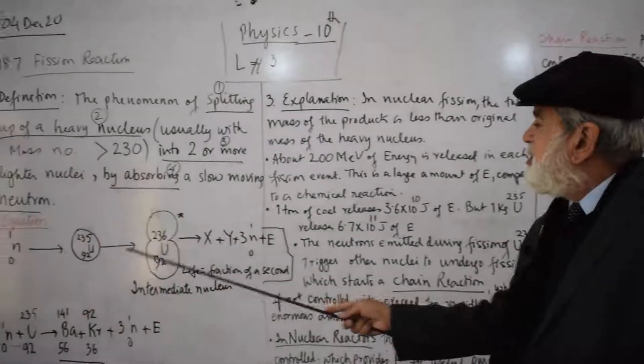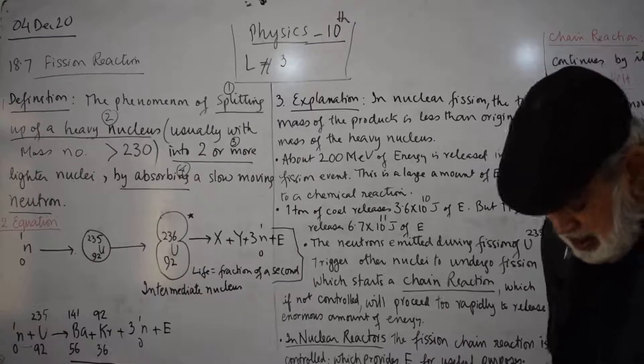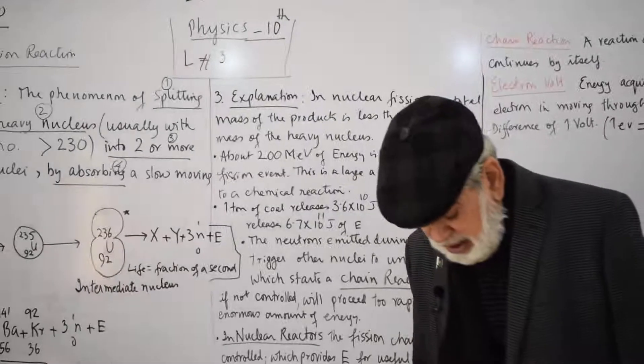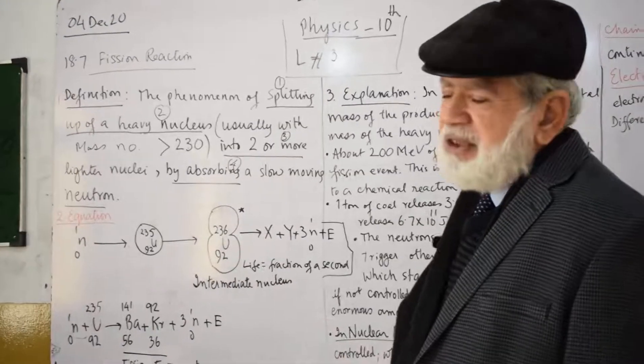And an atom would release 200 million electron volts. Now coming back to the same thing, I'll revise the main thing, these points again. Number one: What is nuclear fission? It is the phenomena, it is the process, in which a heavy nucleus splits up into lighter nuclei.